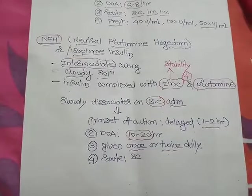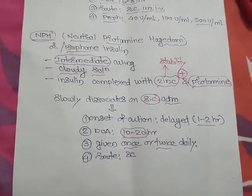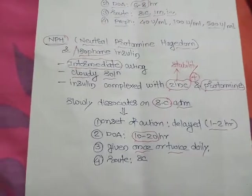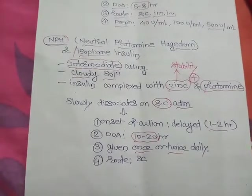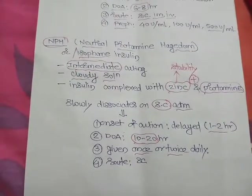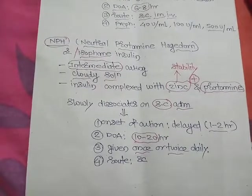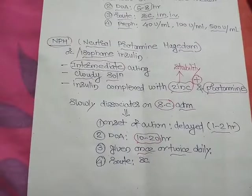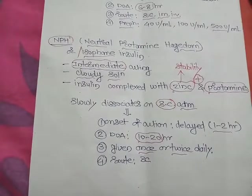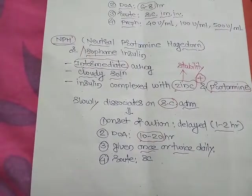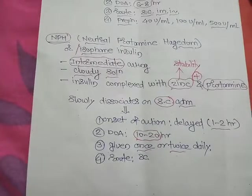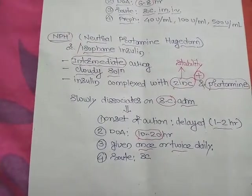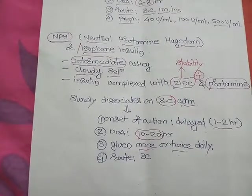Neutral protamine Hagedorn means: neutral indicates it is stable at neutral pH; protamine means regular insulin is complexed with protamine to become more stable; and Hagedorn is the name of the scientist who discovered this isophane insulin.